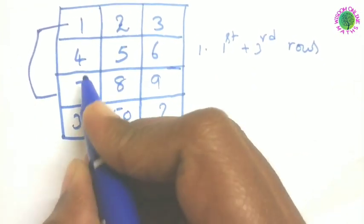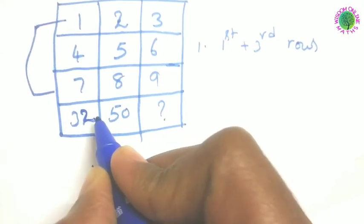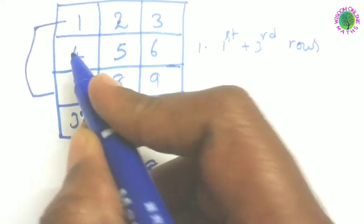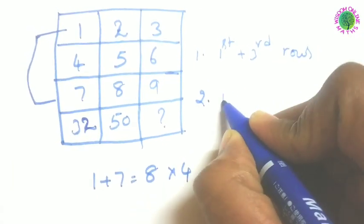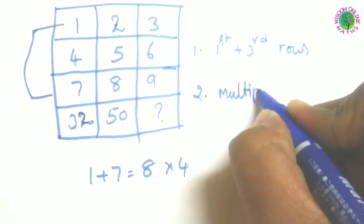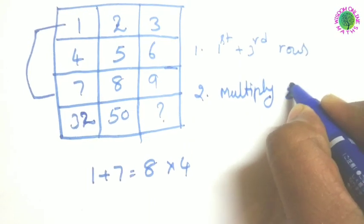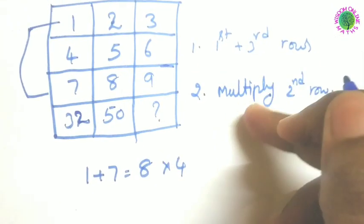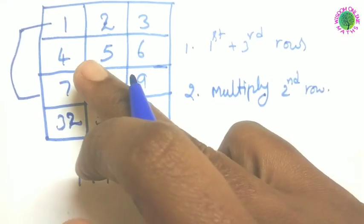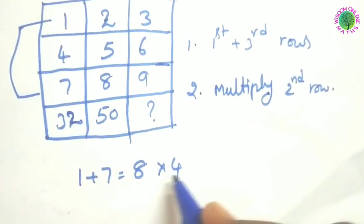From this 8, how 32 will come means the second row, you know that one, has to be multiplied. The second logic step is multiply by second row. First one you should add, the resultant has to be multiplied by the second row digit. So 8 into 4, 32 we got here like this.